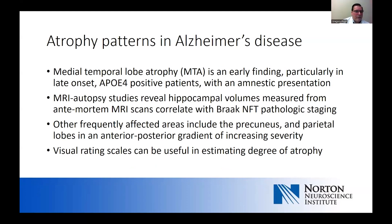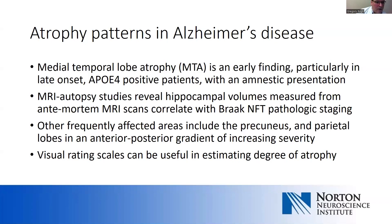What do we see in Alzheimer's disease? Medial temporal lobe atrophy is an early finding, particularly true in late-onset patients with an amnestic presentation who are APOE4 positive — really the classic initial finding in garden-variety Alzheimer's presentation. MRI studies tell us that hippocampal volumes correlate very strongly with Braak neurofibrillary tangle pathologic staging. Other areas frequently involved include the precuneus and parietal lobes. An important finding is this anterior-to-posterior gradient of increasing severity, where frontal lobe volumes are much better preserved than the posterior parietal structures.